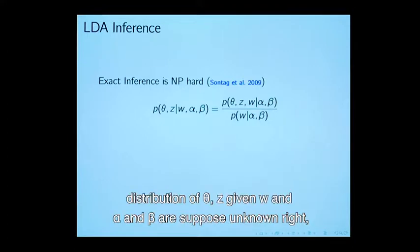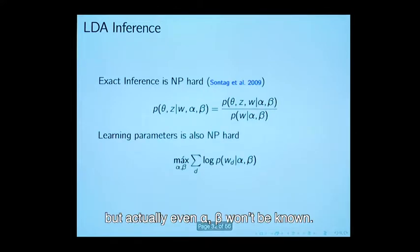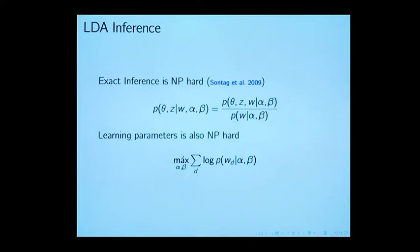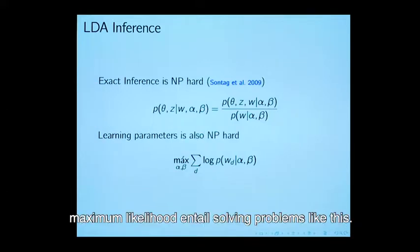But actually, even alpha beta would not be known. To find out the alpha betas, remember the beta is a topic matrix, we can do maximum likelihood. Maximum likelihood entails solving problems like this.